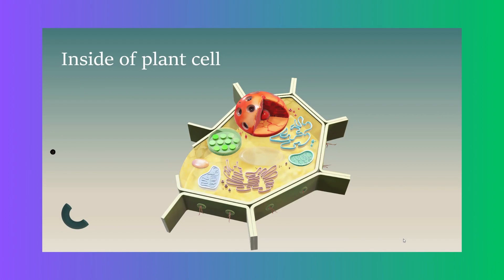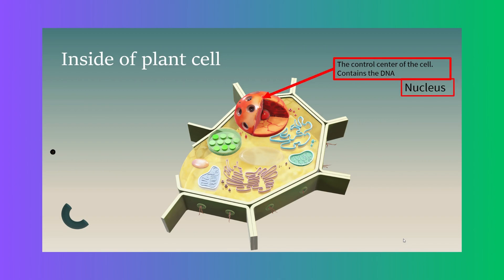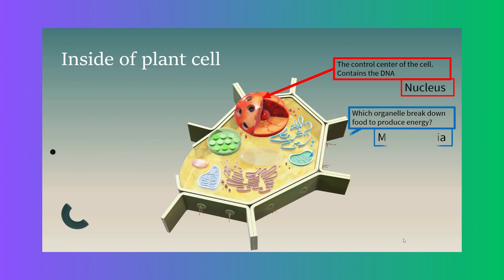Plant cells are really similar to animal cells, but there are some differences. The red cell organelle in the corner is the nucleus — just like in animal cells, it's the big boss of the cell, contains DNA, and controls everything going on. We also have the mitochondria, which breaks down food to produce energy for the cell through cellular respiration — this organelle can also be found in animal cells.